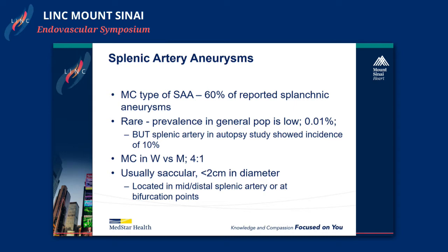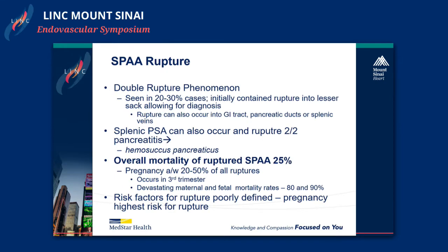Splenic artery aneurysm is the most common type. It's still relatively rare, more common in women, and usually saccular, roughly about 2 centimeters in diameter on diagnosis. Obviously, there's a very high risk of rupture. People talk about the double rupture phenomenon where you rupture into the lesser sac, and that may give you a little bit of time to get the diagnosis and subsequently be able to treat them. Otherwise, they have another real rupture into the free peritoneal cavity, which can be life-threatening. There's significant mortality from a ruptured splenic artery aneurysm, and these are ones we definitely want to fix early on, especially in pregnant women.